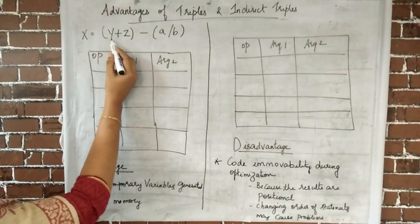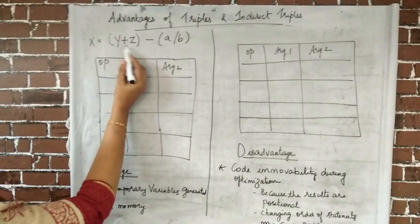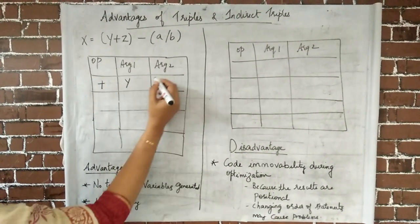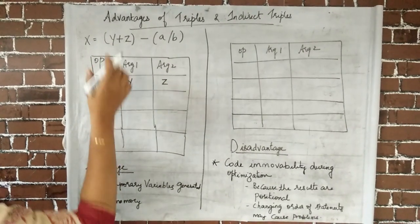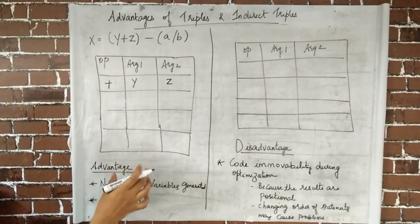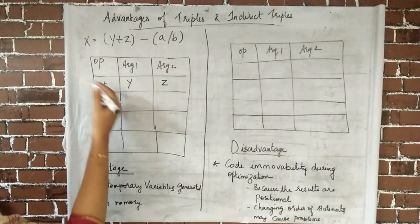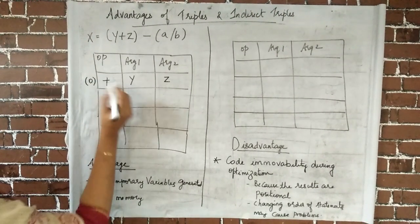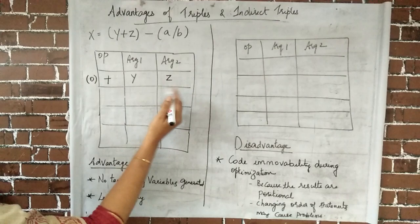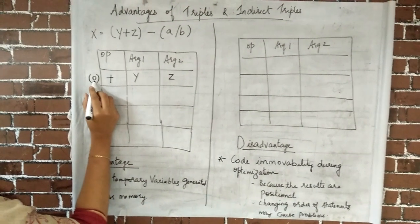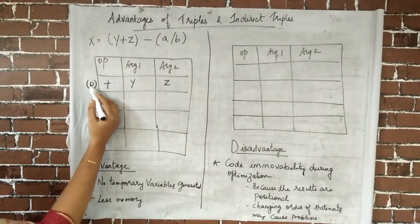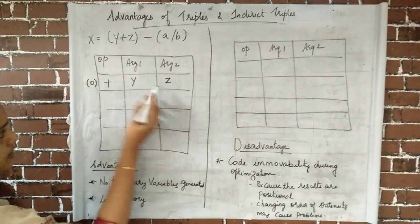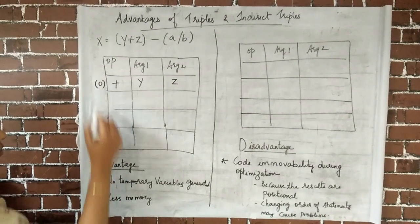First we write the three-address code for y + z. The operator is plus, argument 1 is y, and argument 2 is z. In a triple, we do not have a temporary variable as in a quadruple. Instead, we use the address or position of the triple to represent the computed value. Starting from position 0, this pointer means y + z and the result is available at memory location 0.